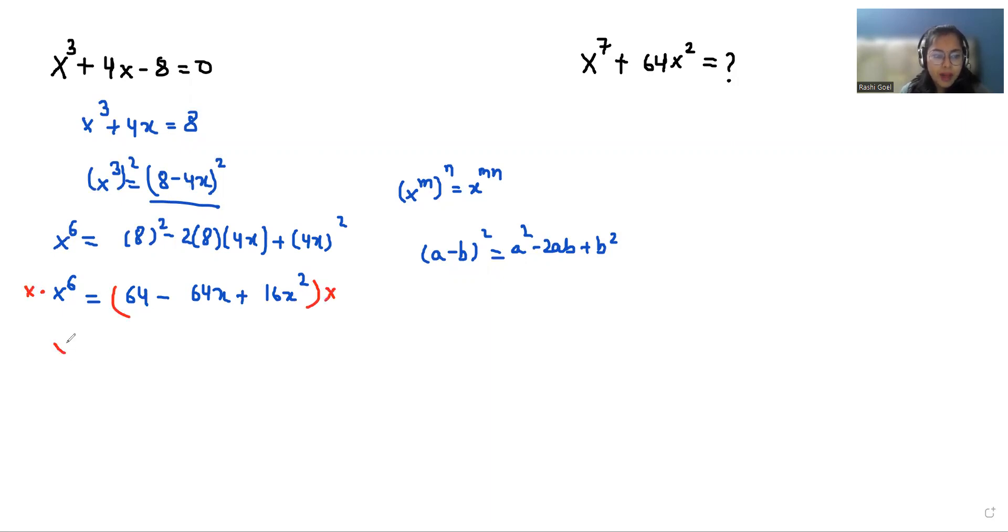So the equation becomes x⁷ = 64x - 64x² + 16x³.